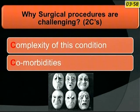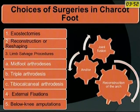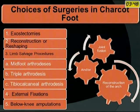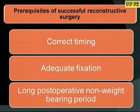Surgical procedures are challenging because of the complexity of this condition and comorbidities. Choices of surgery include exostectomies, reconstruction or reshaping, limb salvage procedures like midfoot, triple and tibiocalcaneal arthrodesis, external fixations, and below-knee amputations. Prerequisites for successful reconstructive surgery: correct timing, adequate fixation, and a long post-operative period.